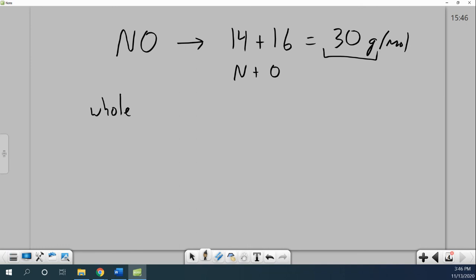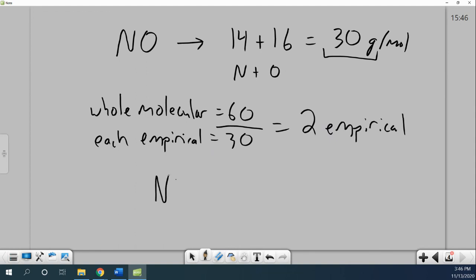So if we have a molecular unit, and each empirical unit is 30, we just divide them, and it tells me there are two empirical units. So my final molecular formula would be the empirical formula times two. Two N's, two O's.